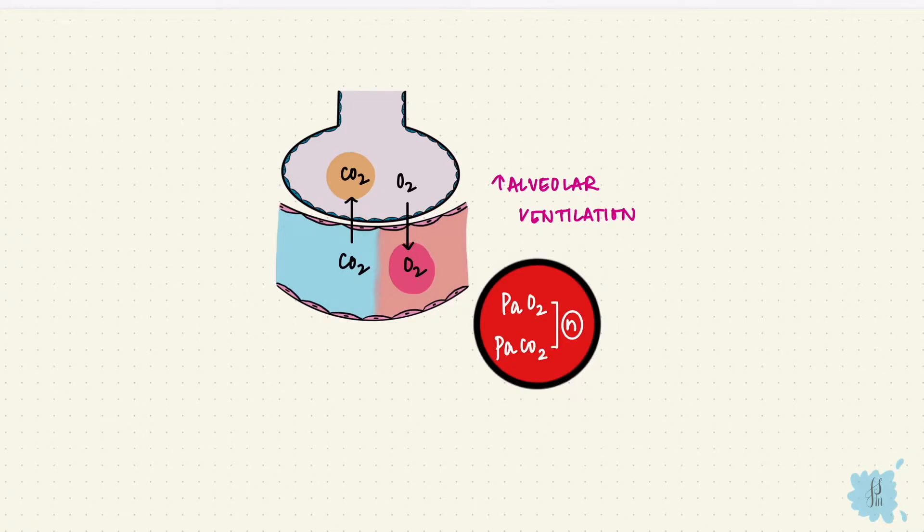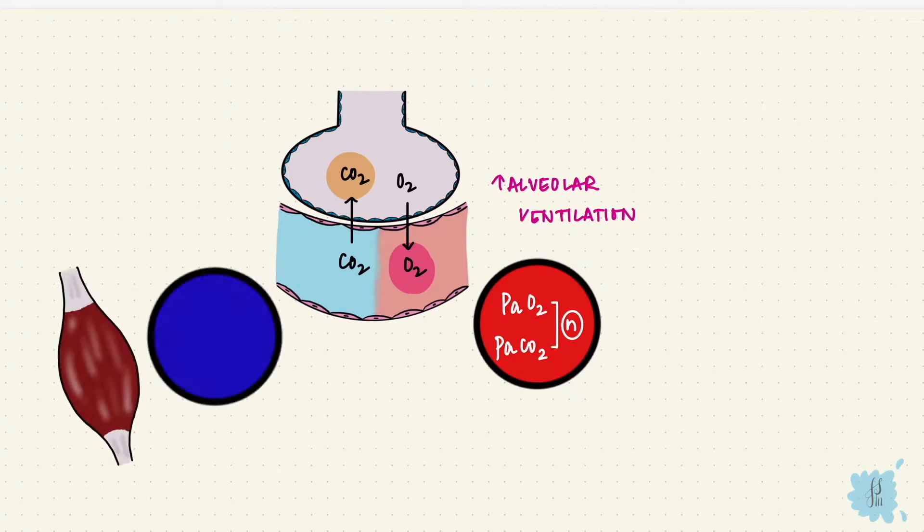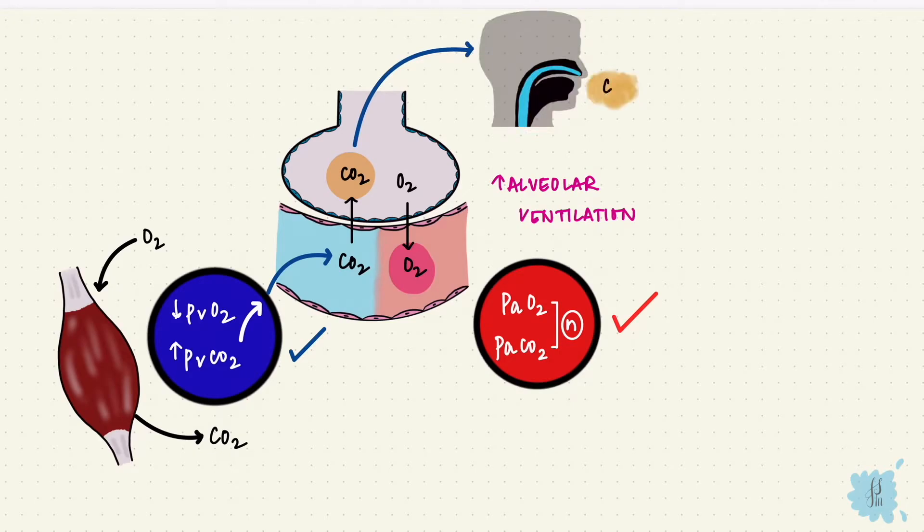This is arterial. The increased carbon dioxide produced from tissue metabolism increases the venous carbon dioxide. And from oxygen consumption, the venous oxygen reduces. So arterial oxygen and carbon dioxide stay normal, but venous carbon dioxide increases and venous oxygen reduces. The increased carbon dioxide is cleared out by increased alveolar ventilation before it can reach the arteries.